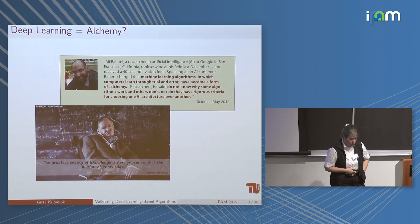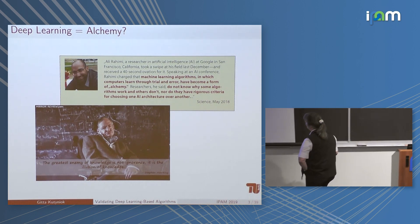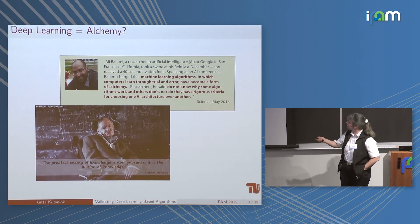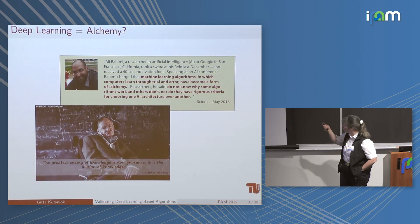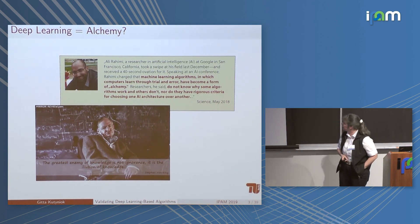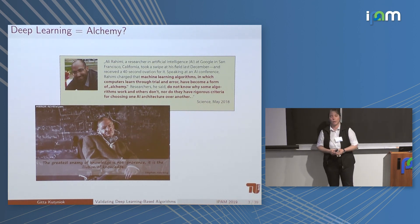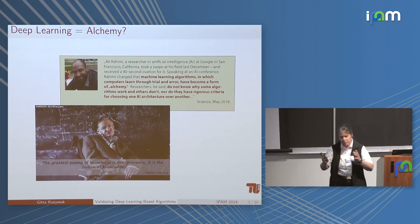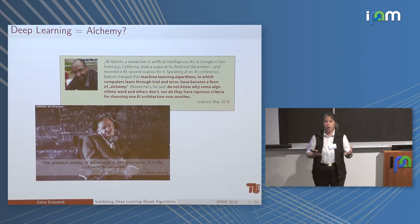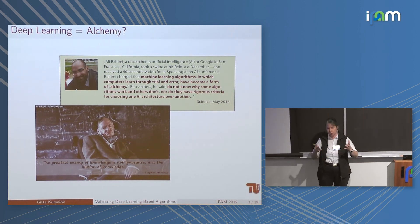This lack of theoretical understanding was discussed in an interesting event last year. Ali Rahimi, here in California at a big conference, gave a plenary talk where he took a swipe at this field and even received an ovation for it. He said that machine learning algorithms have become a form of alchemy — researchers do not know why some algorithms work and others don't, nor do they have rigorous criteria for choosing one AI architecture over another. There was a big discussion about to which extent we already have sufficient knowledge and what is still lacking.